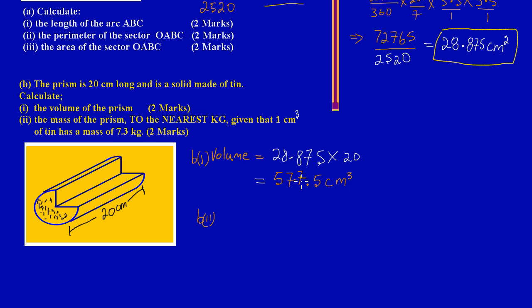That's another easy two marks. Let's look at the intuition behind this question. We initially calculated the volume and got 577.5 centimeters cubed. Based on the statement they gave us, they're saying to every one centimeter cubed, there is 7.3 kilograms.